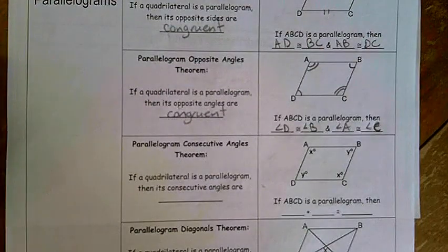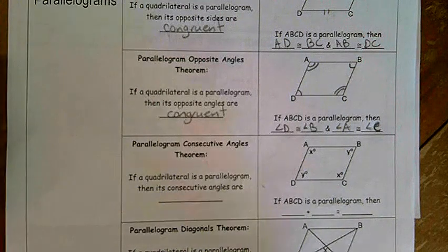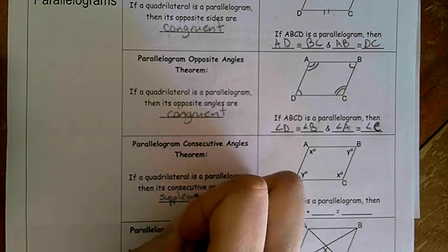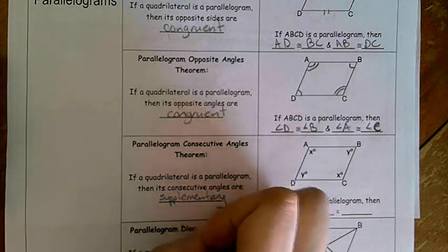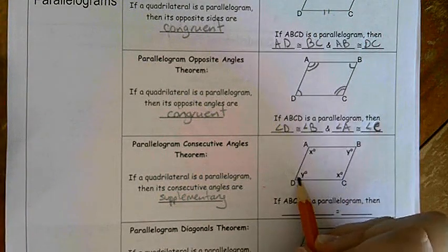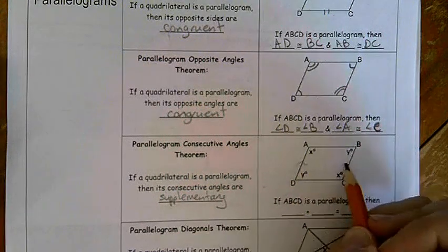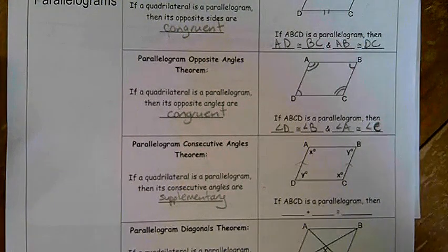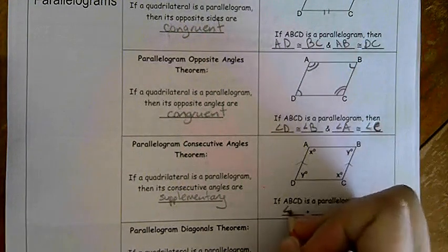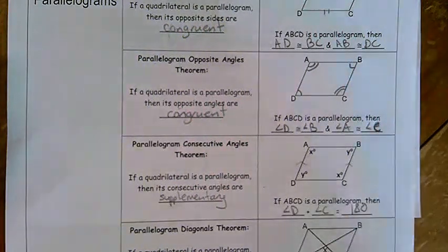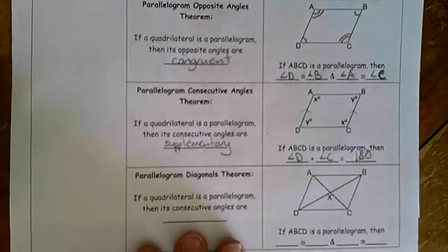The parallelogram consecutive angles theorem. If a quadrilateral is a parallelogram, then its consecutive angles are supplementary. That's because, in this case for example, X and Y are consecutive interior angles. Because AD and BC are parallel, DC is the transversal. Hey, look at that, back to our angle identities. I told you, it's like they never go away. So we have angle D plus angle C is going to equal 180.